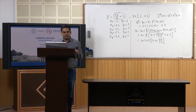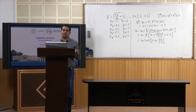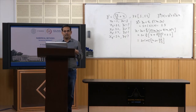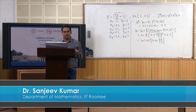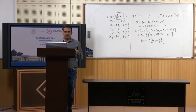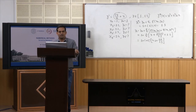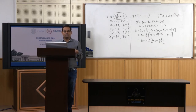In this lecture we have seen two methods having error of order h²: the quadratic Taylor method and Euler's modified method. In the next lecture we will learn another class of numerical methods for solving ordinary differential equations — the Runge-Kutta methods. Thank you very much for listening to this lecture.